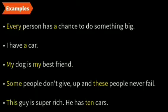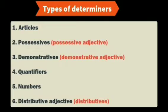I hope the determiners are clear for you. Now let us see the types of determiners. We have articles, possessive adjectives, demonstratives, quantifiers, numbers, and distributive adjectives. These are the 6 types of determiners.